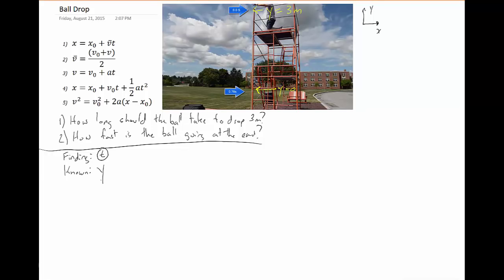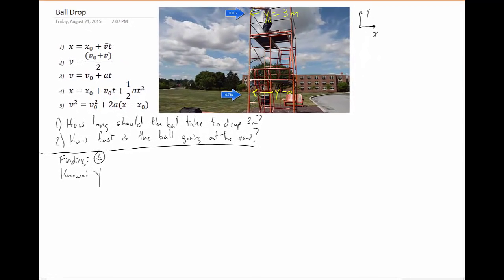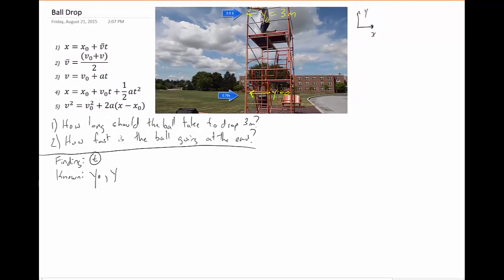We need to figure out which one is the beginning, which one is the end. It starts at time zero up at the top here. So this is actually Y0, where that zero or Y initial corresponds to the time. Y0 or Y initial means Y at time equals zero. That's equal to 3 meters. We also know Y or the final Y, that's equal to zero.